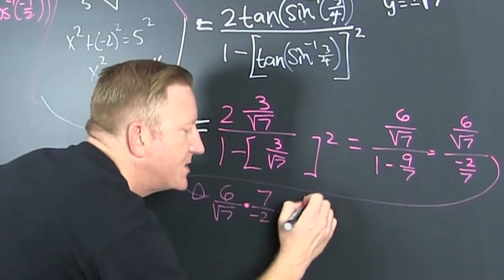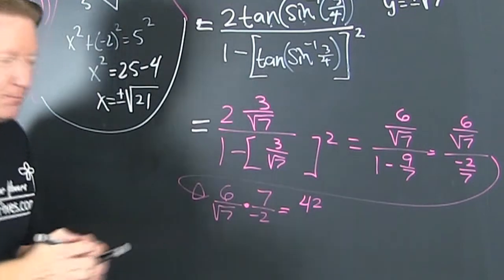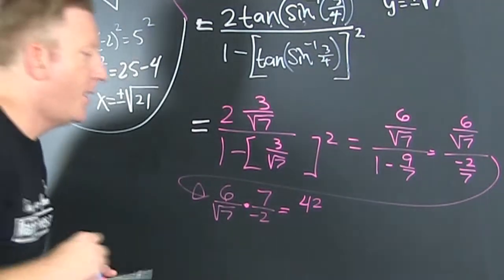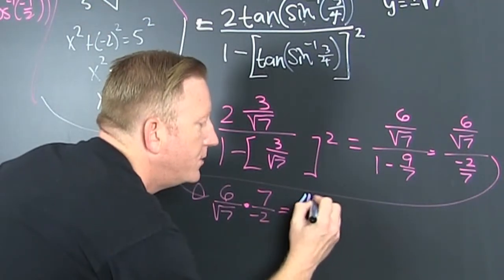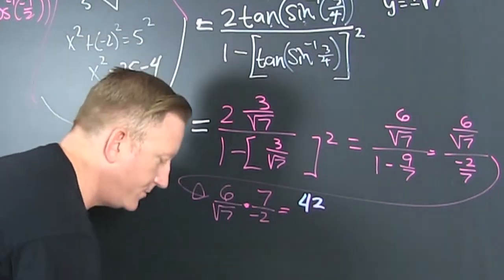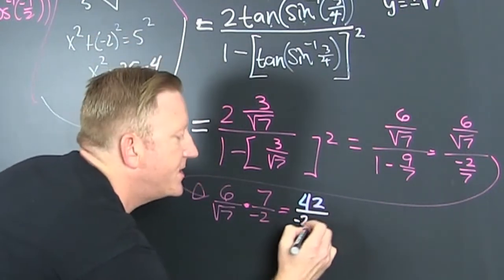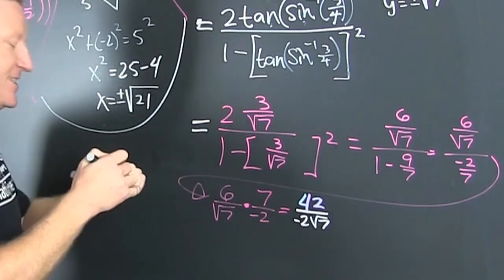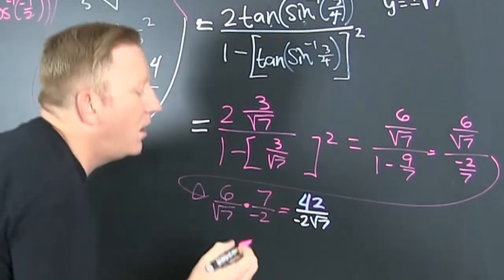and we get back to that problem, and then that's a 42. I should have done it in blue. 42. That's all over a minus two root seven. I don't understand how they got that answer. Oh,